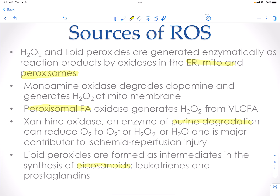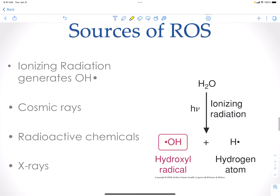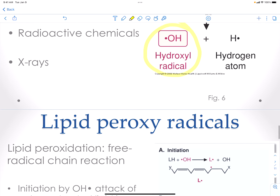Intermediates of eicosanoids are also important. Eicosanoids are important in your immune cells and immune system — they form leukotrienes and prostaglandins and use lipid peroxides as intermediates. Another source is radiation, which will generate our hydroxyl radical. This can be through X-rays, radioactive chemicals, or cosmic rays. Basically, radiation interacts with the water molecules abundant in our body and generates a hydroxyl radical and a hydrogen atom. As long as the hydroxyl radical is neutralized quickly, you'll be fine.